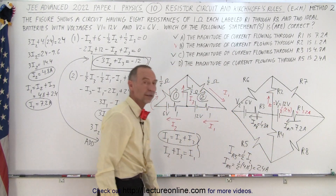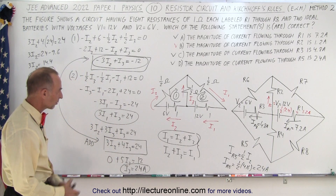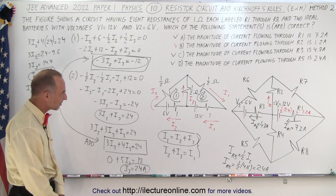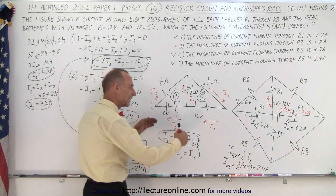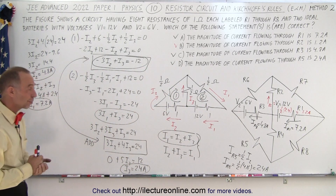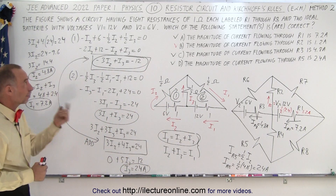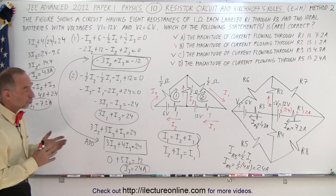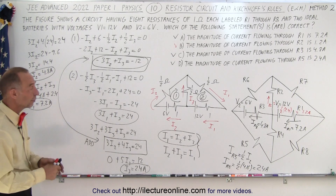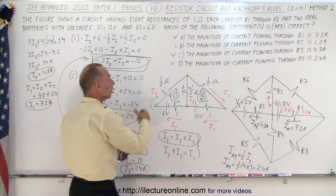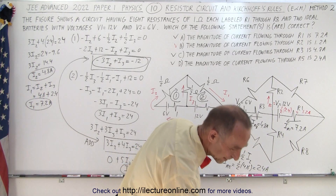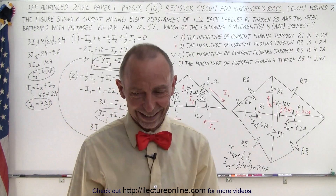That's how it's done using the symmetry method. Comparing the two approaches: this method uses three equations with three unknowns, while the previous method used five equations with five unknowns — though you don't need to redraw the circuit with the other approach. It's not necessarily faster overall, so let us know which method you prefer.